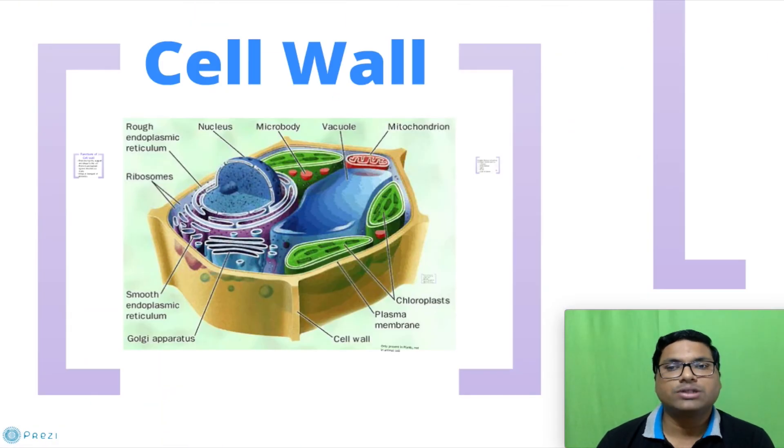So in this way, we have studied the structure of cell wall present in eukaryotic cell. We will continue our discussion of different cell organelles present in the eukaryotic cell in our next video. So I hope if you have liked the video, please like, comment, share and subscribe. Bye-bye.